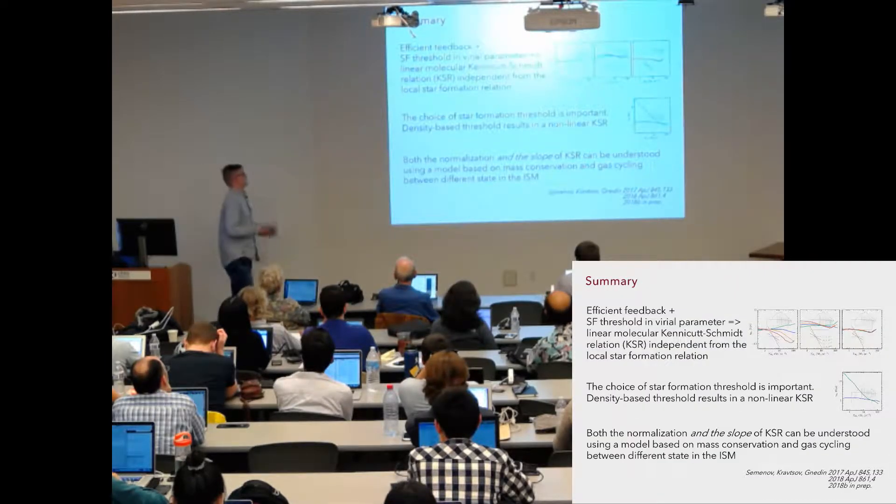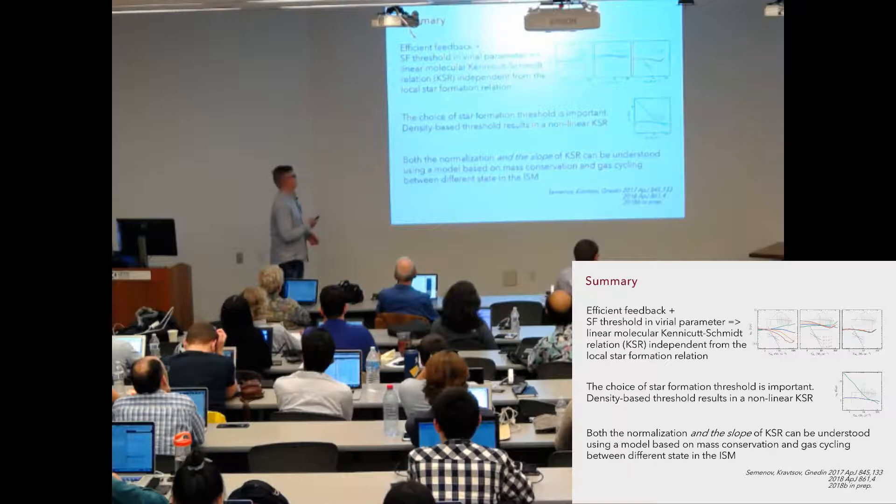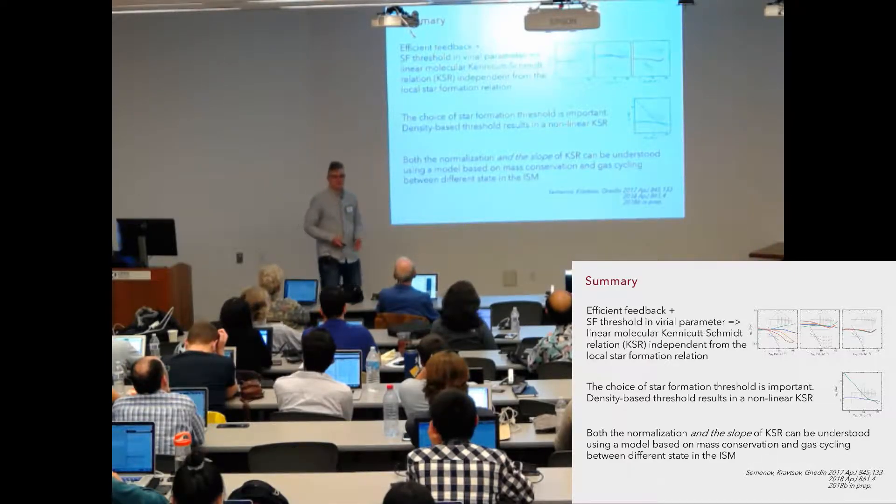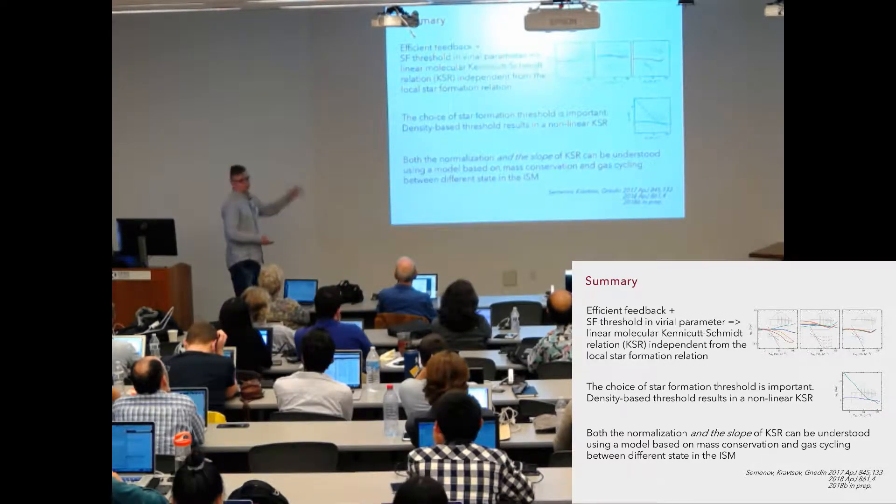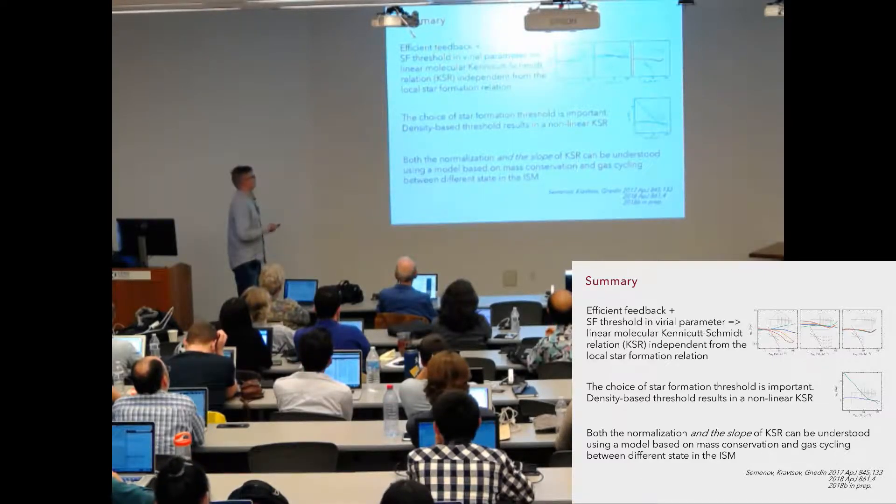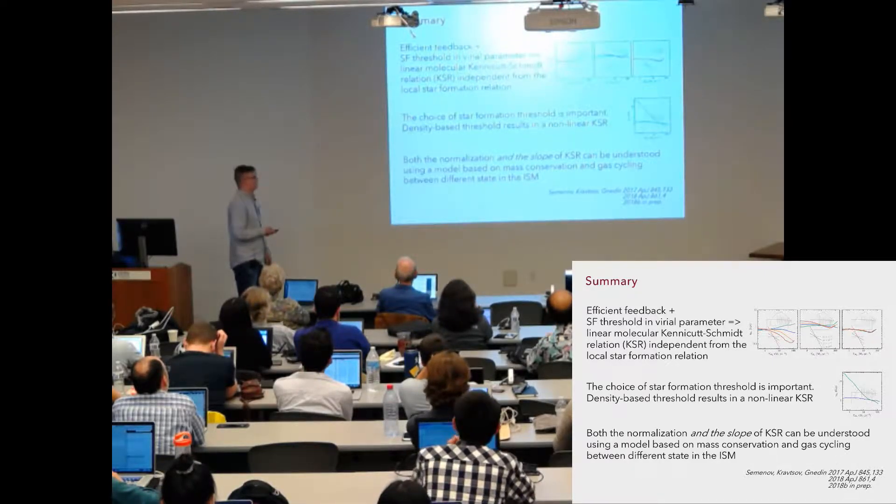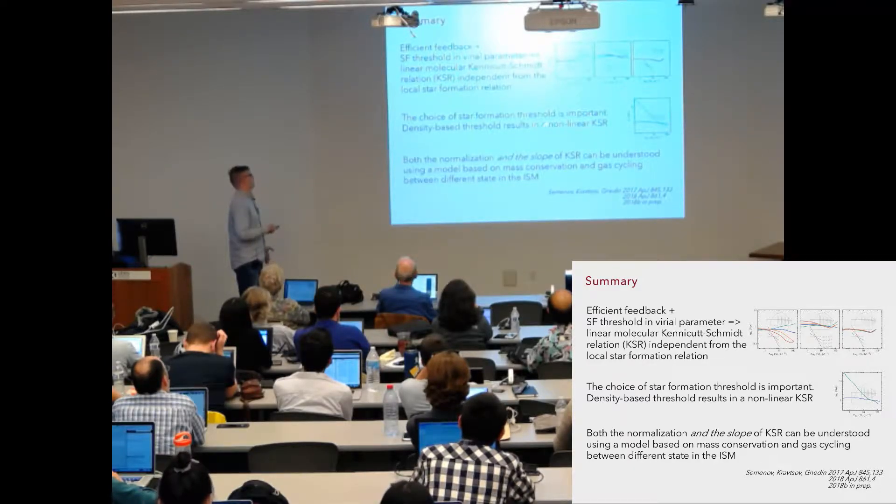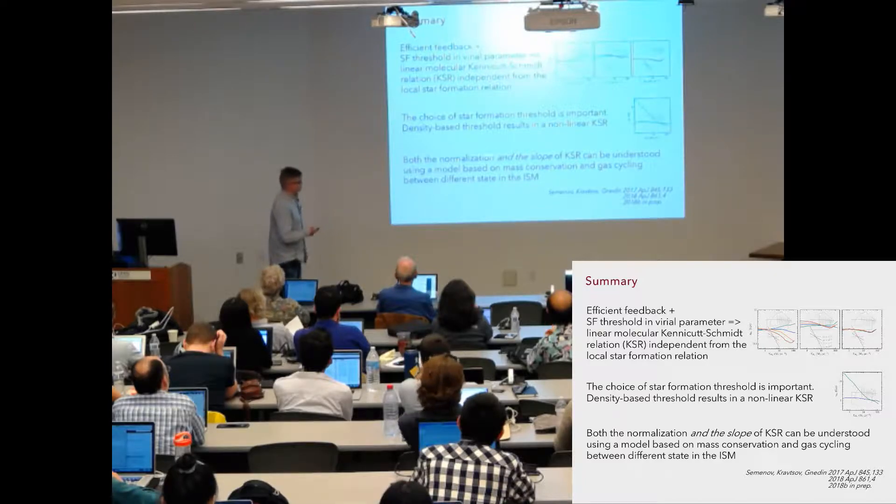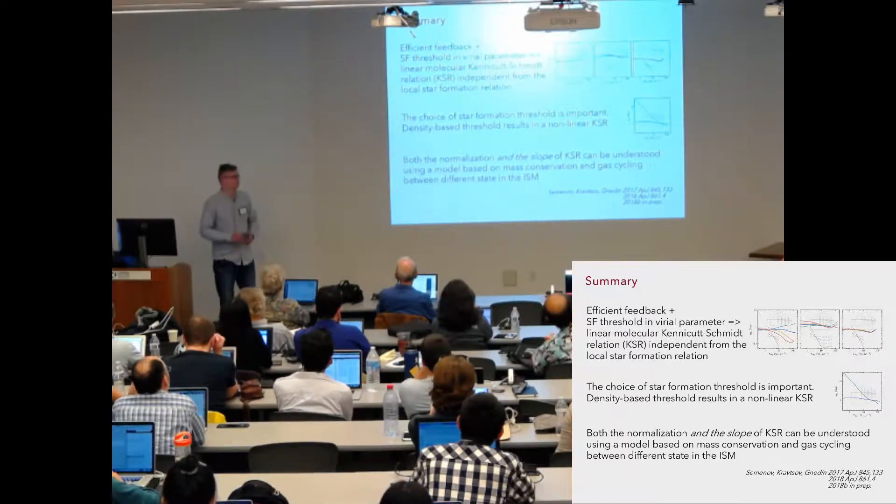And here is my summary. Our simulation results show that when feedback is efficient and the star formation threshold is a virial parameter, we get a molecular Kennicutt-Schmidt relation with a linear slope close to what is observed. However, if we choose a threshold, it's very important. And when we set a density based threshold, we get a much steeper relation. And both normalization and the slope of these relations can be understood using this model. Thanks.